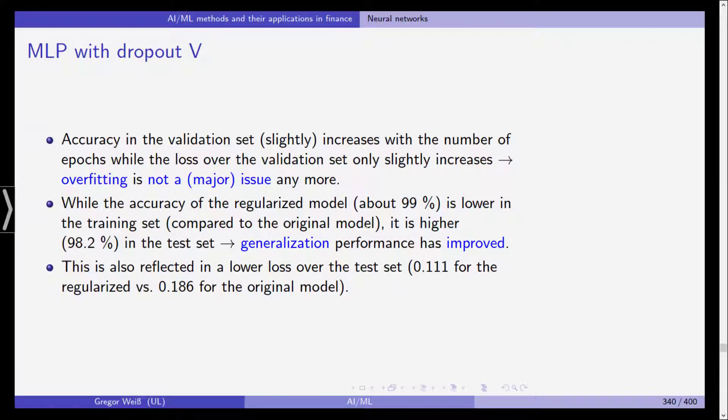While the accuracy of the regularized model at about 99% is lower in the training set compared to the original model, it is actually higher at 98.2% in the test set. So generalization performance has improved and this is also reflected in a lower loss over the test set.